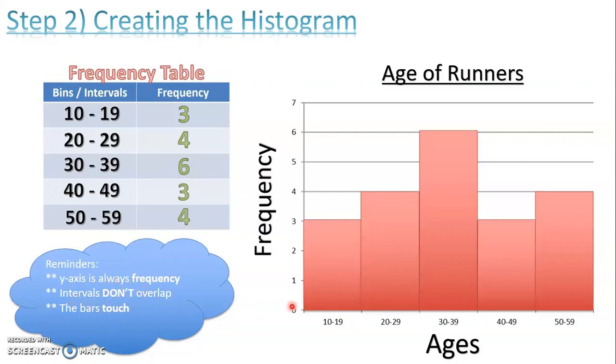The intervals do not overlap. That means I'm going 10 to 19, then 20 to 29. I'm not saying 10 to 20, 20 to 30, 30 to 40. No, that's overlapping, and we don't want that. We don't want to count some numbers twice. So we want to make sure they're always 10 to 19, 20 to 29, or the numbers could be different depending on the numbers you have, or the intervals can be different depending on the numbers you have, but we don't want any overlap.